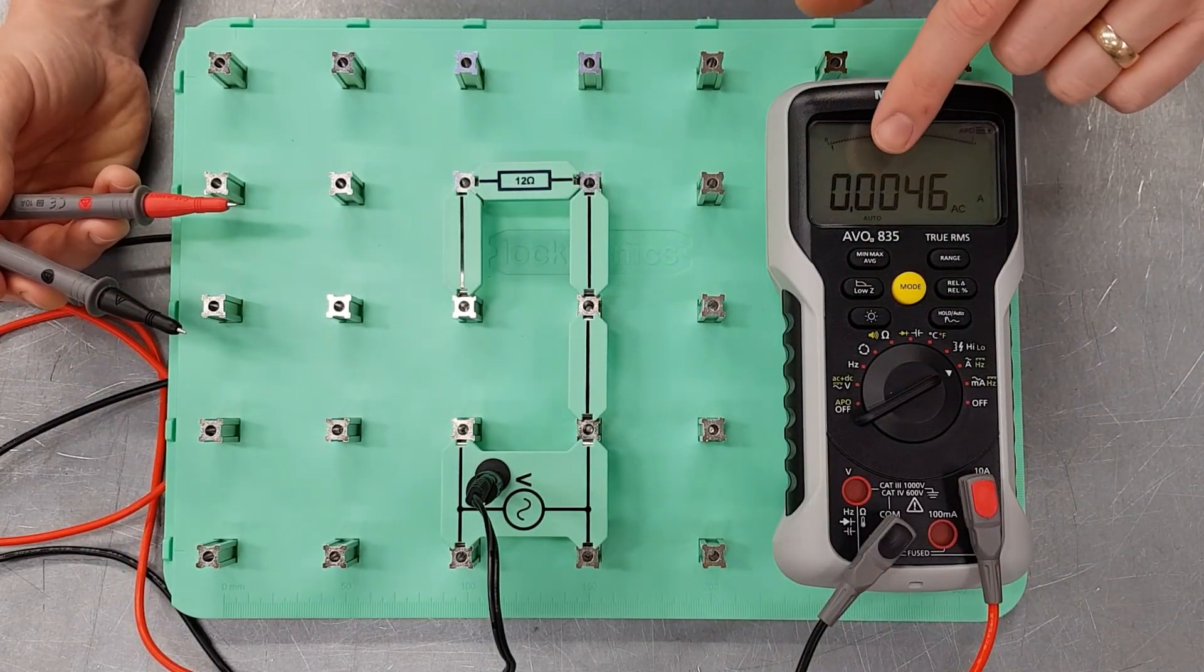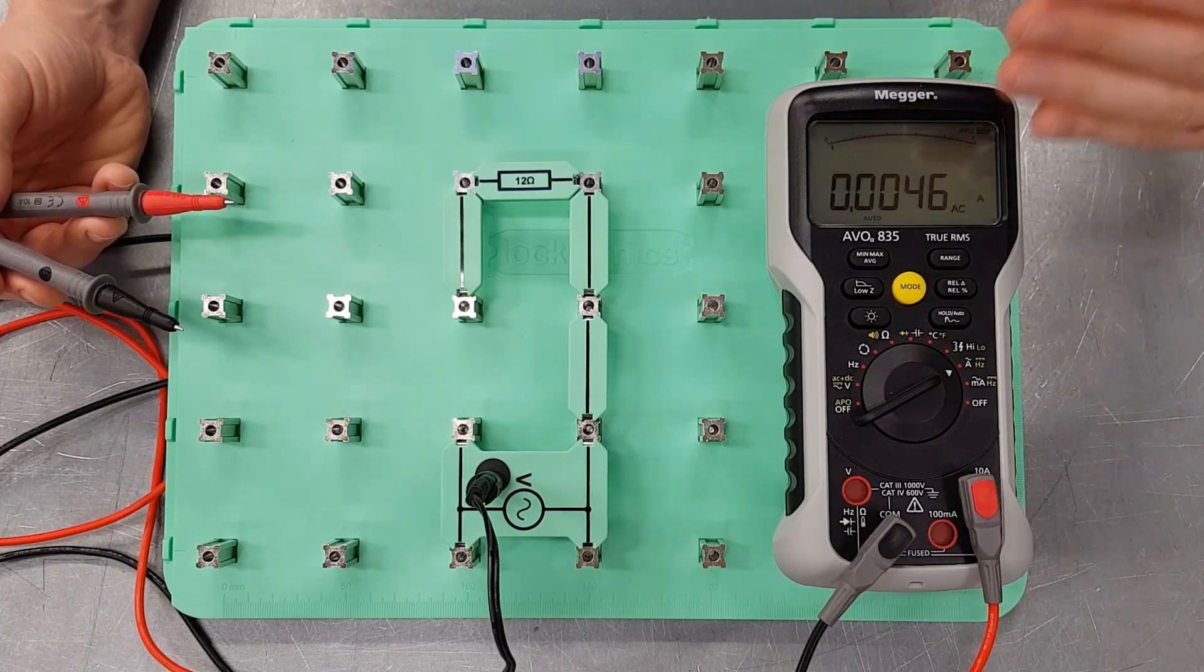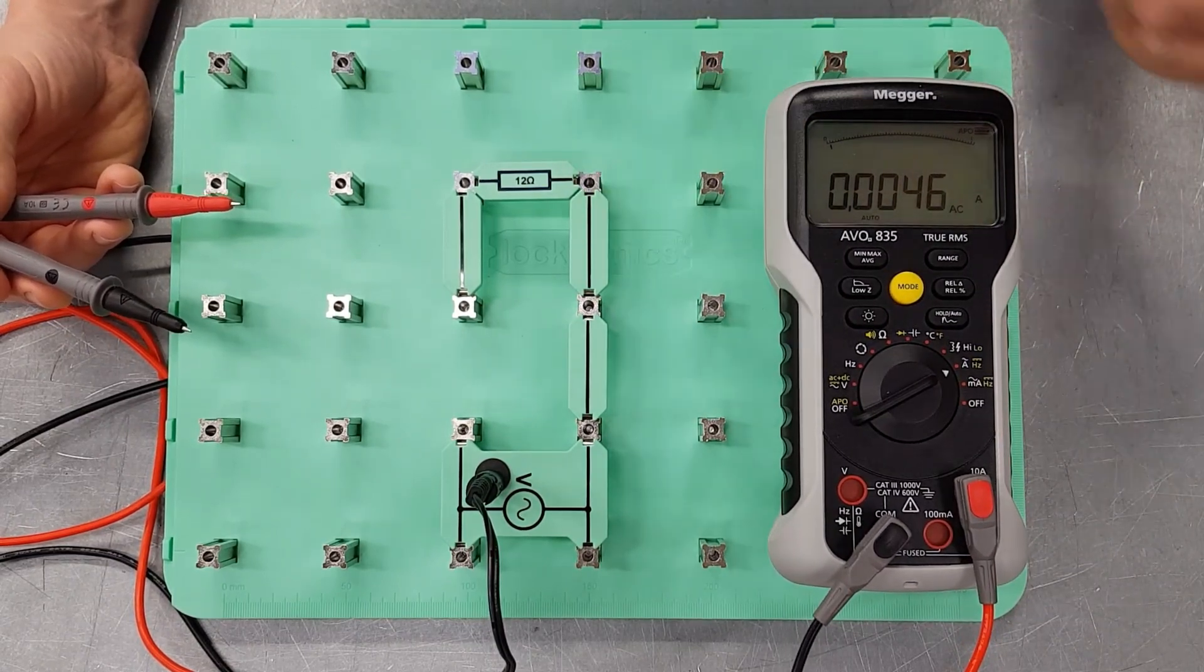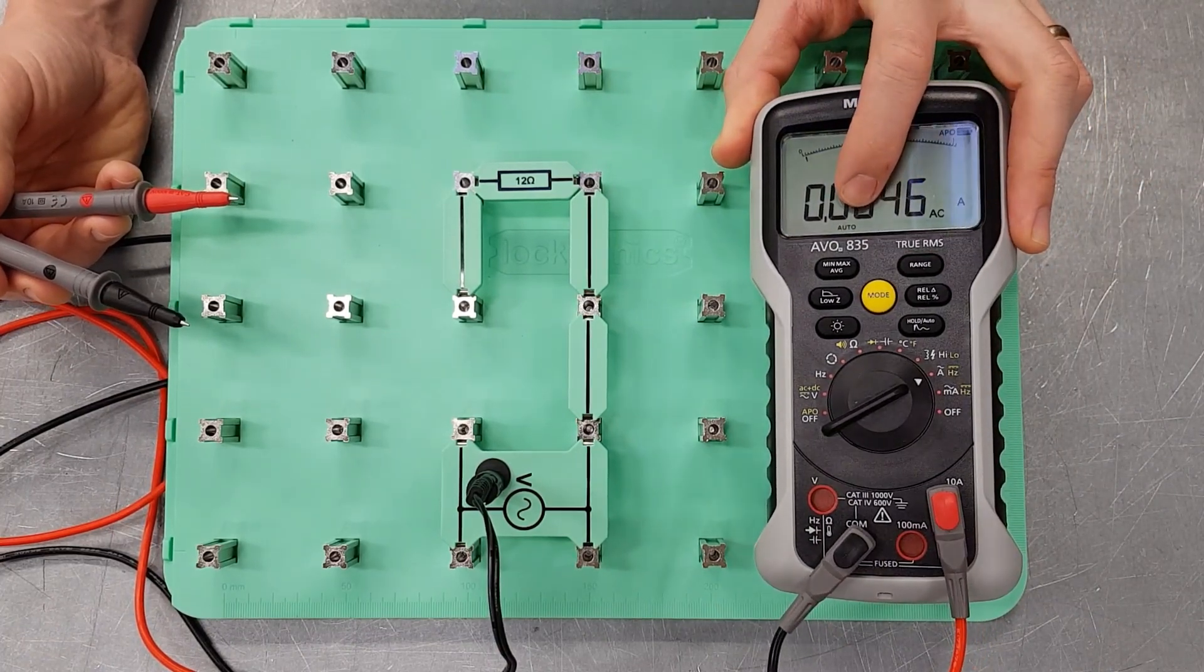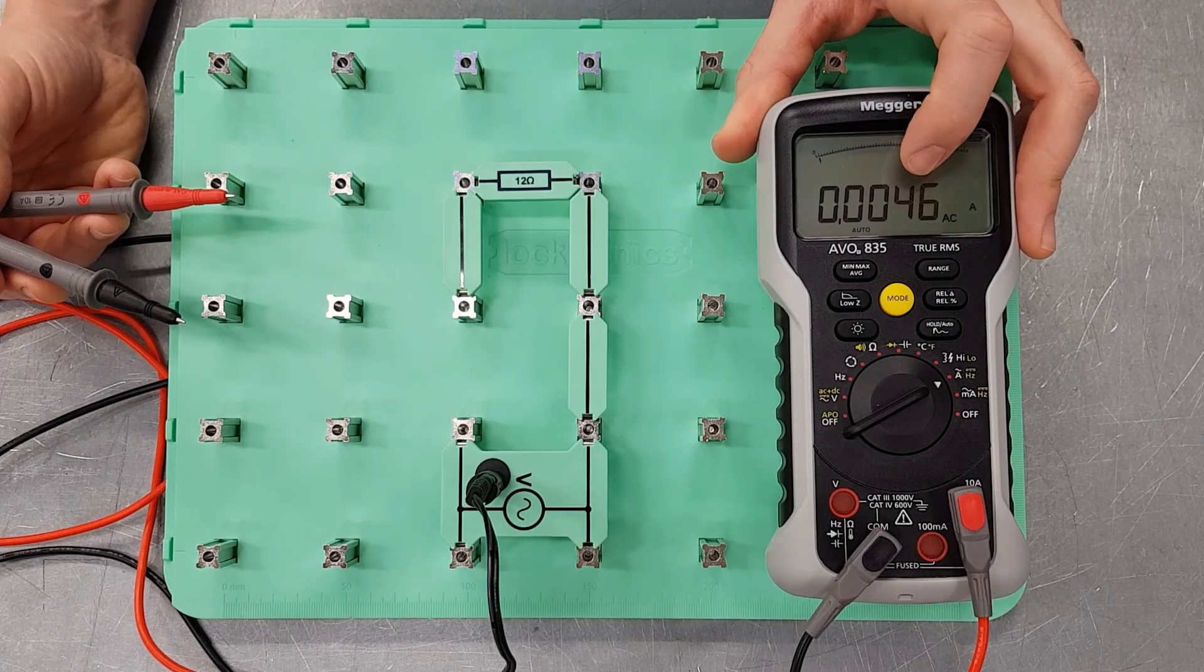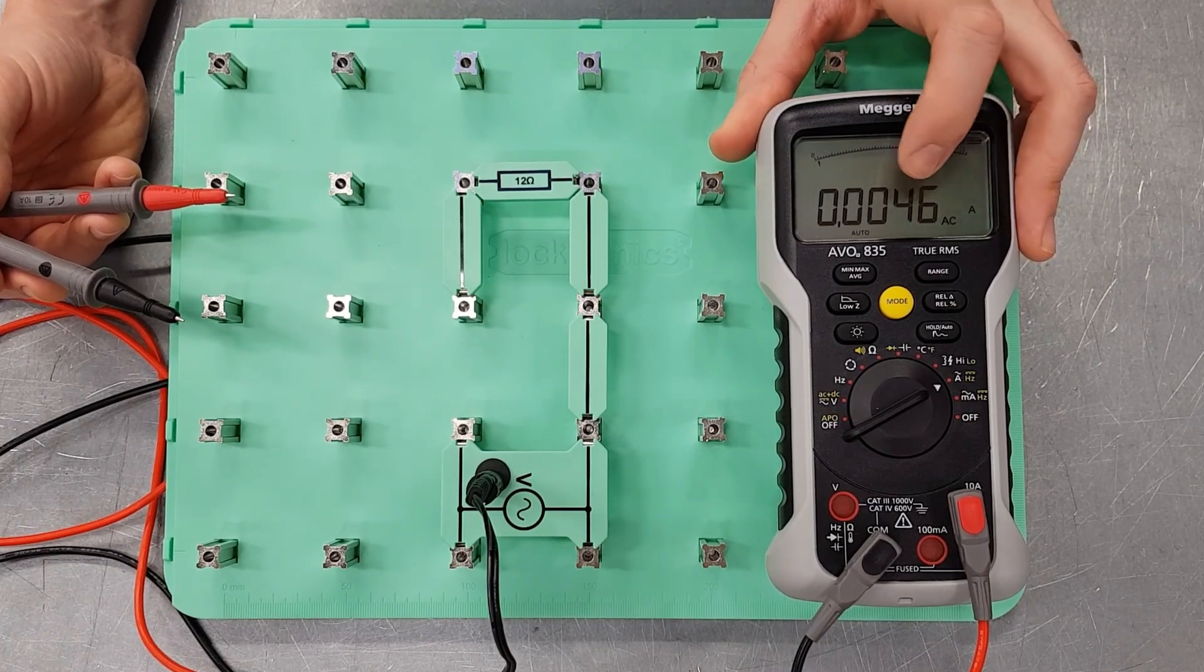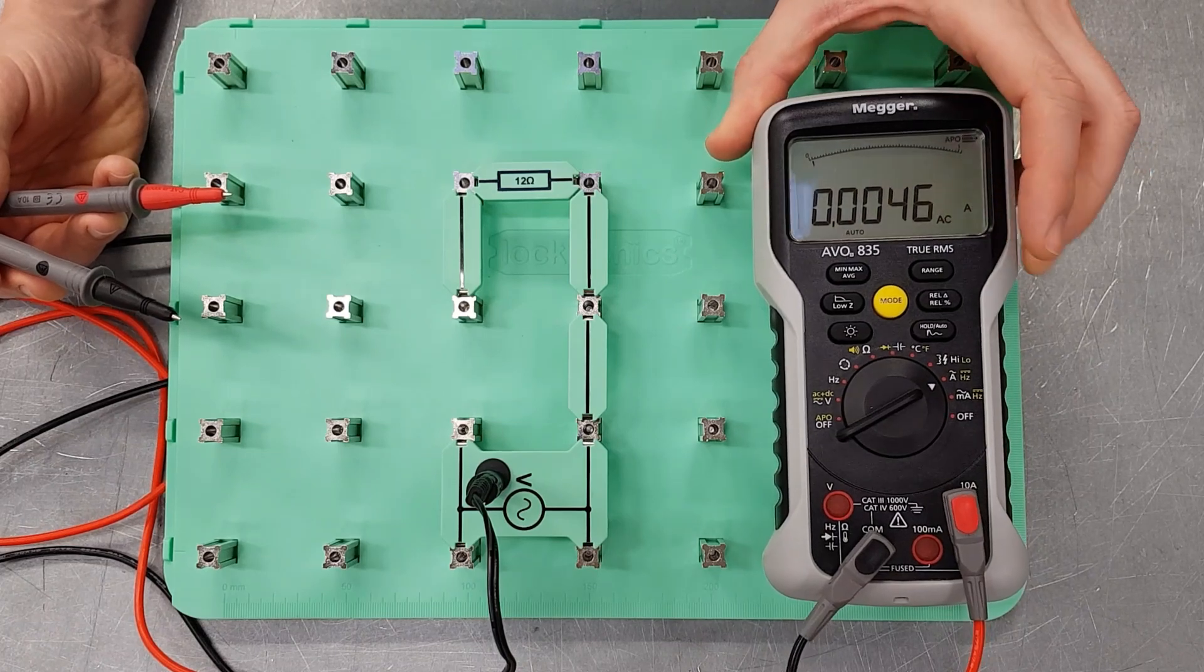Now you may have noticed that when we were carrying out that test, that the meter briefly said OL. Now what that means is over limit. In other words, it's gone beyond the range of what it can measure. This multimeter will clearly measure up to 10 amps on this setting, and we weren't measuring anywhere near 10 amps. The reason it did that is that the meter is set on the auto ranging function. So what that means is that the multimeter will monitor how much current flows, and then it will pick the most relevant range to show you the answer in. So just for a minute, it goes over the limit of what it initially knows, and then it will settle back down to the correct value.